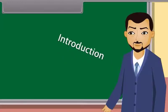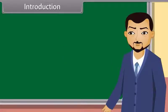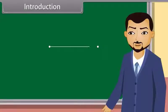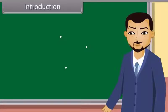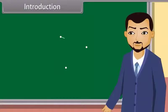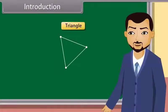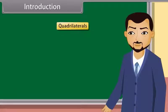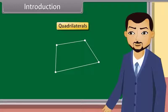Introduction: Students, can you tell what we get when we join two points? A line. Yes, we get a line when we join two points. And what do we get when we join three points? A triangle. Yes, we get a triangle. We also get collinear points. Today we'll study about quadrilaterals. A quadrilateral is formed when we join four points.